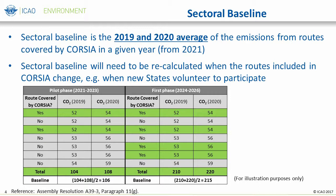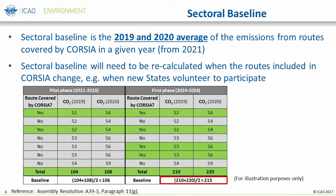This recalculation is done at the start of each year. This can be shown by calculating the sectoral baseline for the first phase in the sample data and comparing it to the pilot phase baseline. These values — 104 and 108 — are added together and divided by two to calculate the average total CO2 emissions covered by CORSIA for the pilot phase sectoral baseline, which is 106. In the illustration, four routes are now covered under CORSIA in the first phase. The total CO2 emissions for those routes are summed separately for 2019 and 2020, which are 210 and 220 respectively, giving a first phase sectoral baseline of 215. So the sectoral baseline changes from 106 for the pilot phase to 215 for the first phase in this illustrative example.